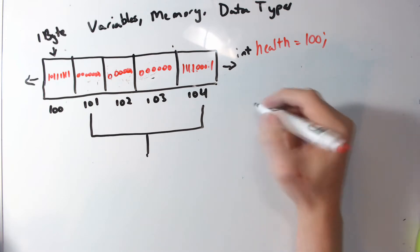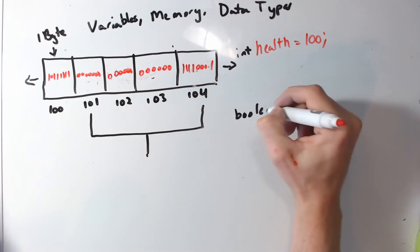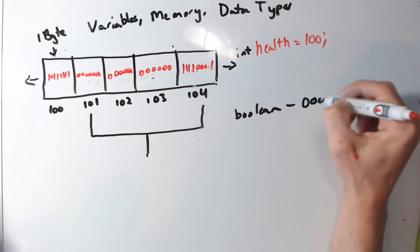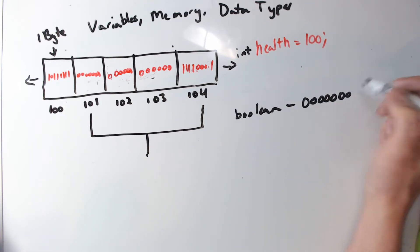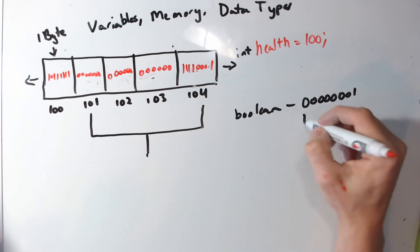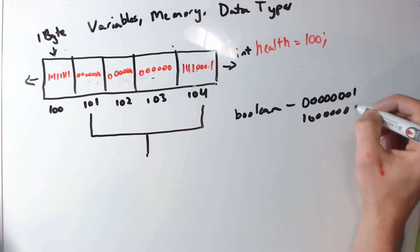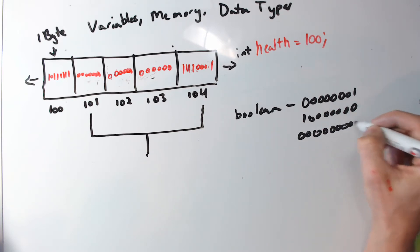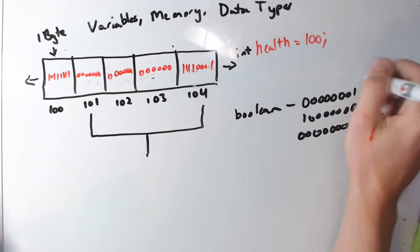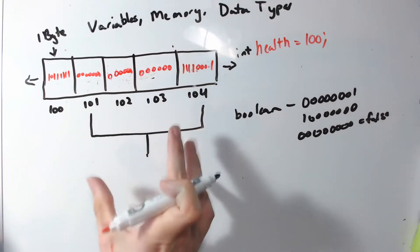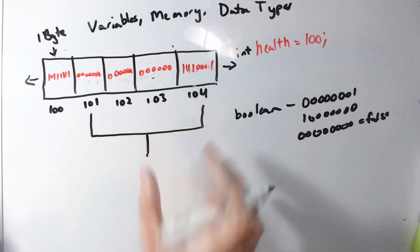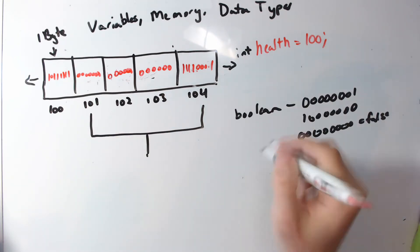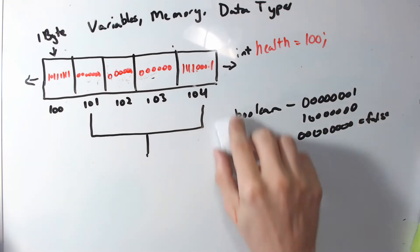What about a boolean? A boolean is true or false. A boolean only needs one byte, because it can be represented by just a one or a zero — all zeros means false. We could store it as one bit, but our memory is partitioned into eight-bit sections, so there's no one-bit section available. Therefore a boolean takes one byte.